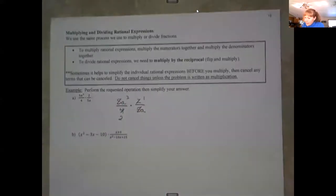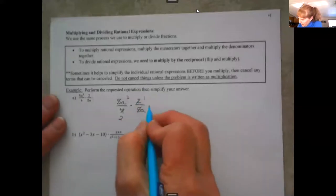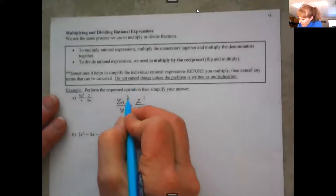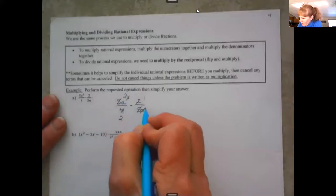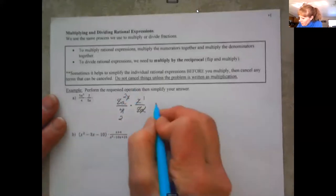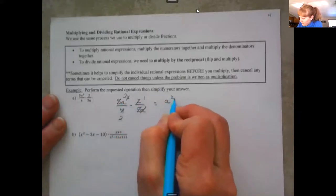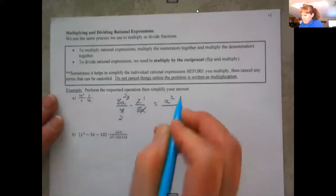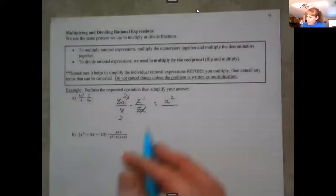The a's will reduce. When you're reducing variables, you subtract the exponents. In this case, we'll take 3 minus 1 and get 2, so we'll make that a². All that's left in the numerator is an a squared, and in the denominator is a 2.